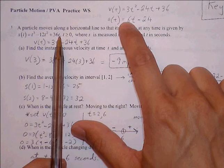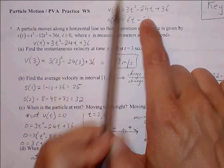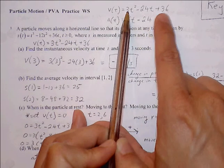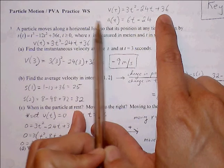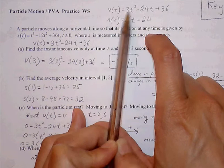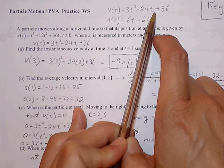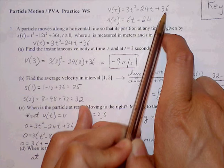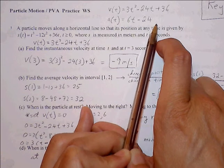We'll go ahead and find acceleration since we're going to use it later. Taking the derivative of velocity: 3t squared becomes 6t, negative 24t becomes negative 24, and 36, a constant, goes to 0.